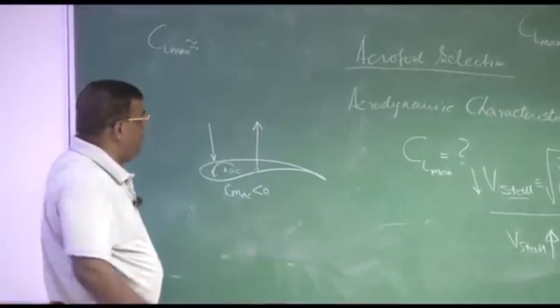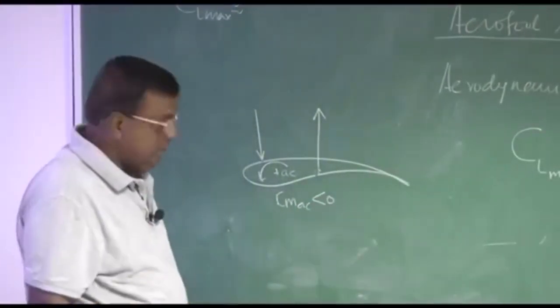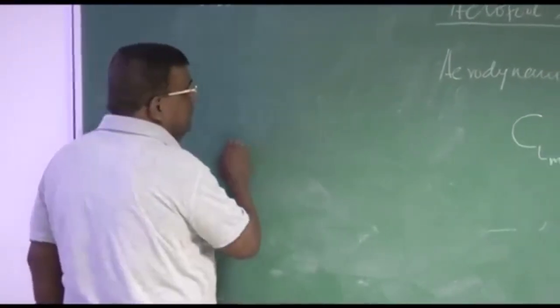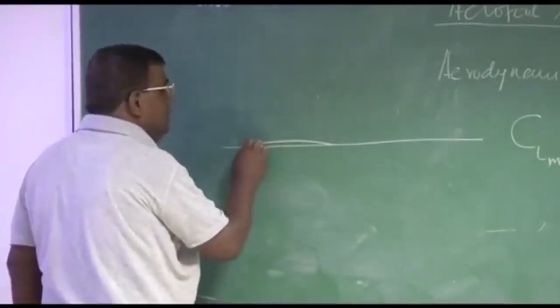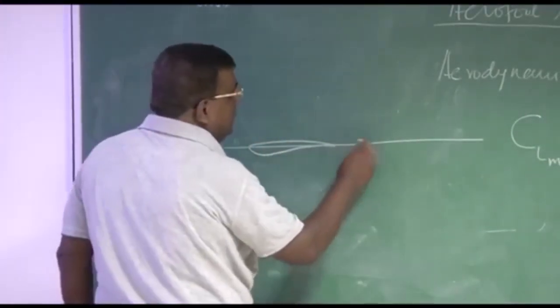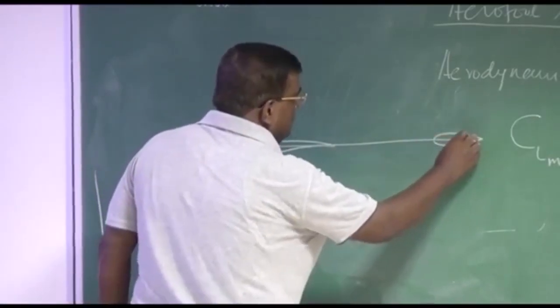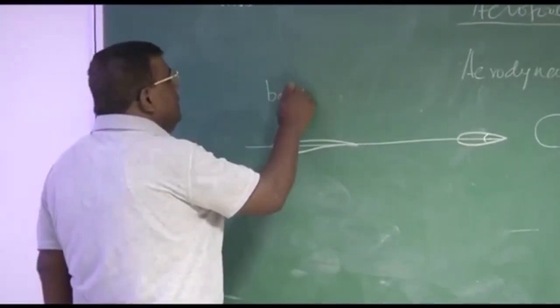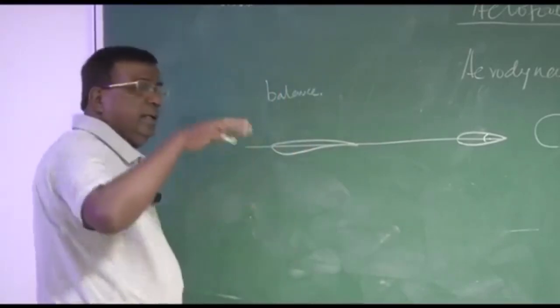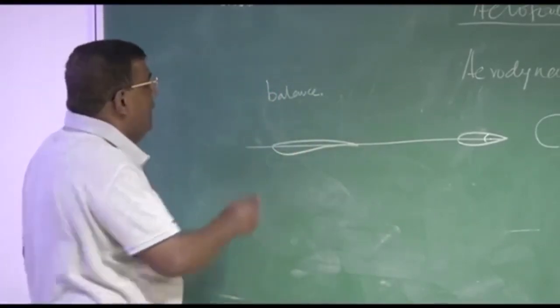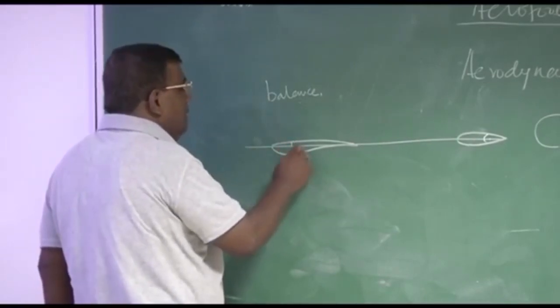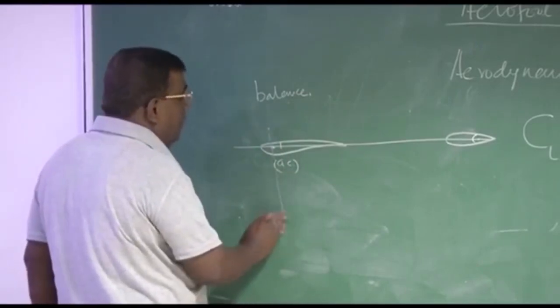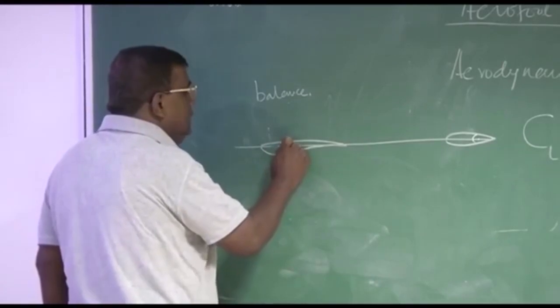So about the aerodynamic center, when you want to shift these forces to aerodynamic center, it will have CMAC negative. That is one challenge you have to handle CMAC negative. More and more camber you are giving, CMAC will become more and more negative. What is the issue of CMAC being more negative? Let us see that. Suppose this is the wing and this is the horizontal tail. I want to balance this airplane, that is balance this airplane in air.